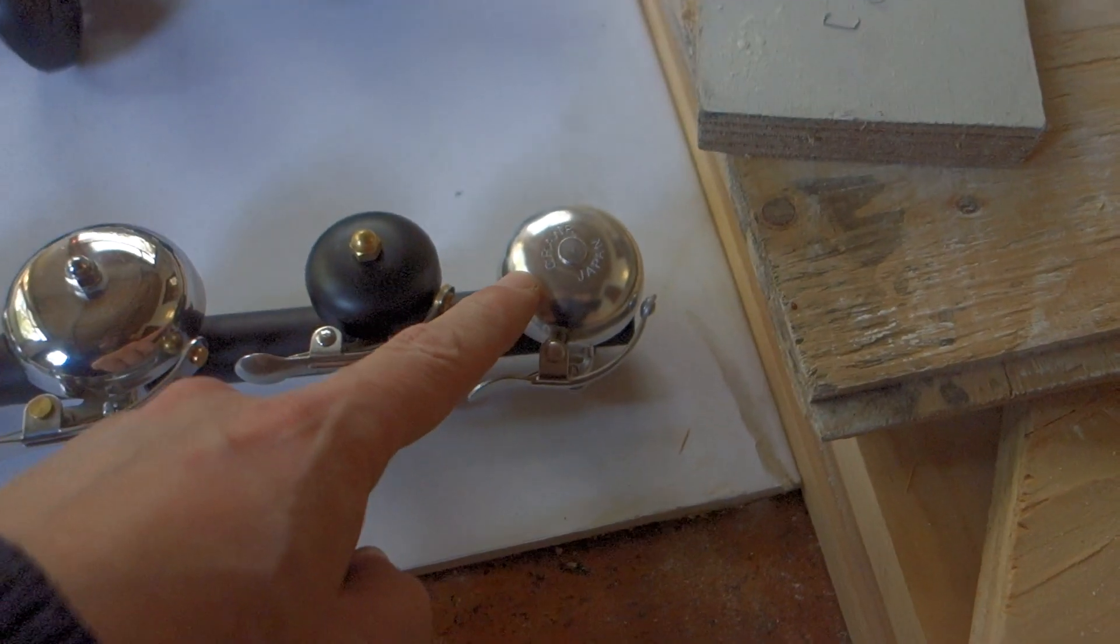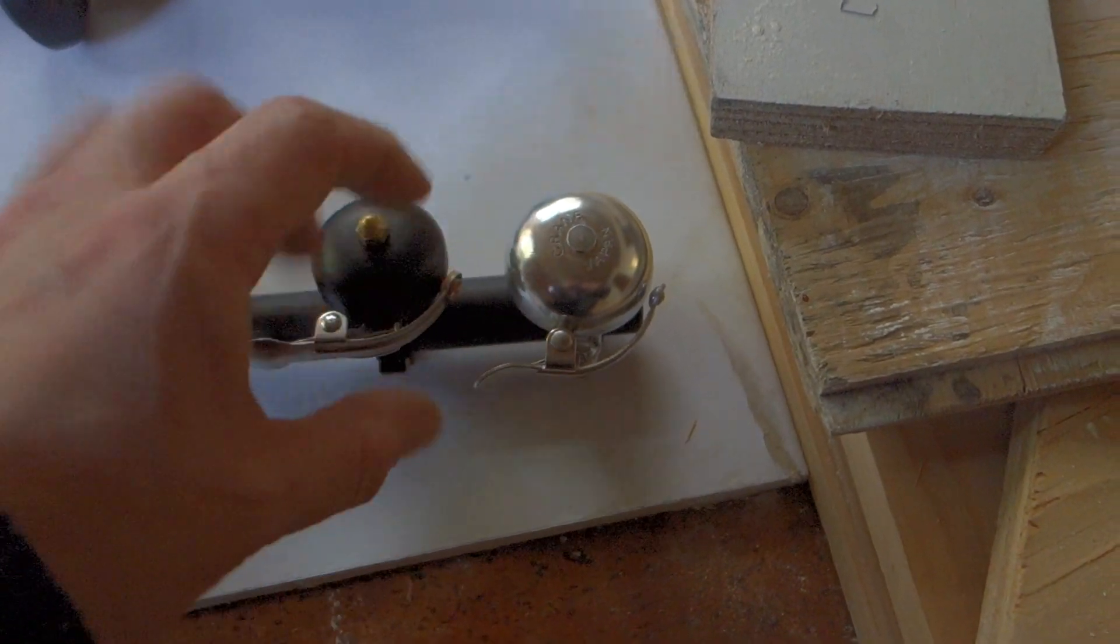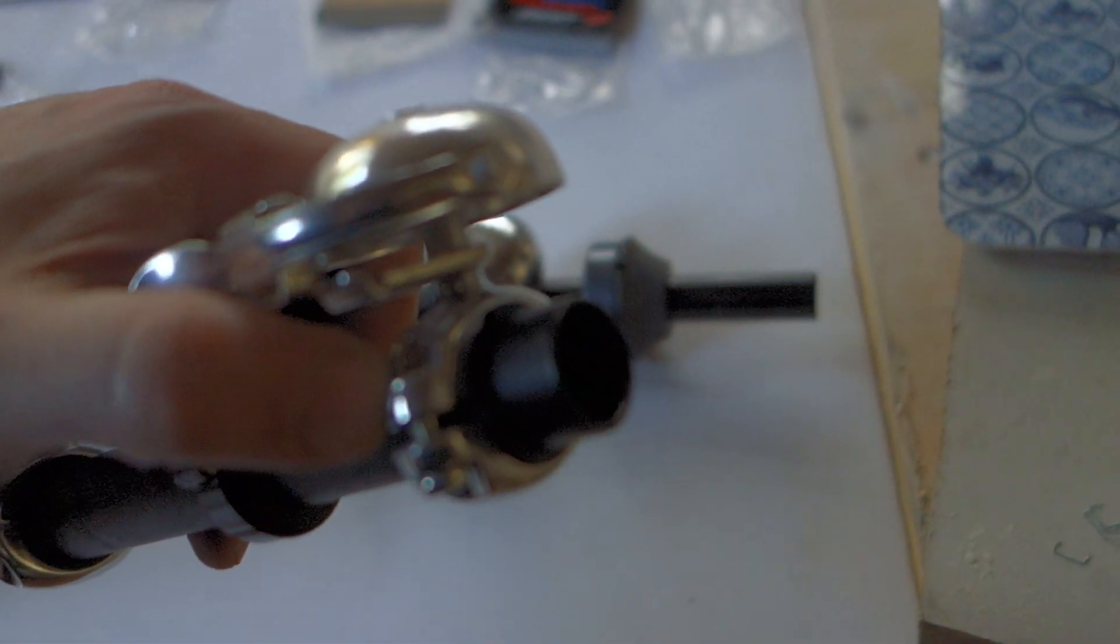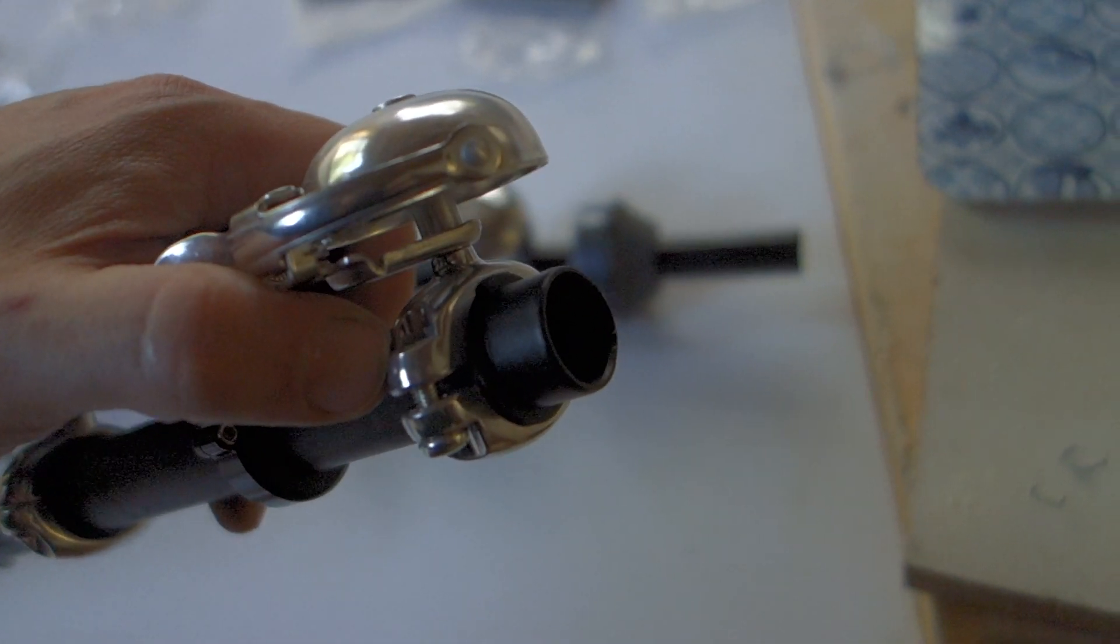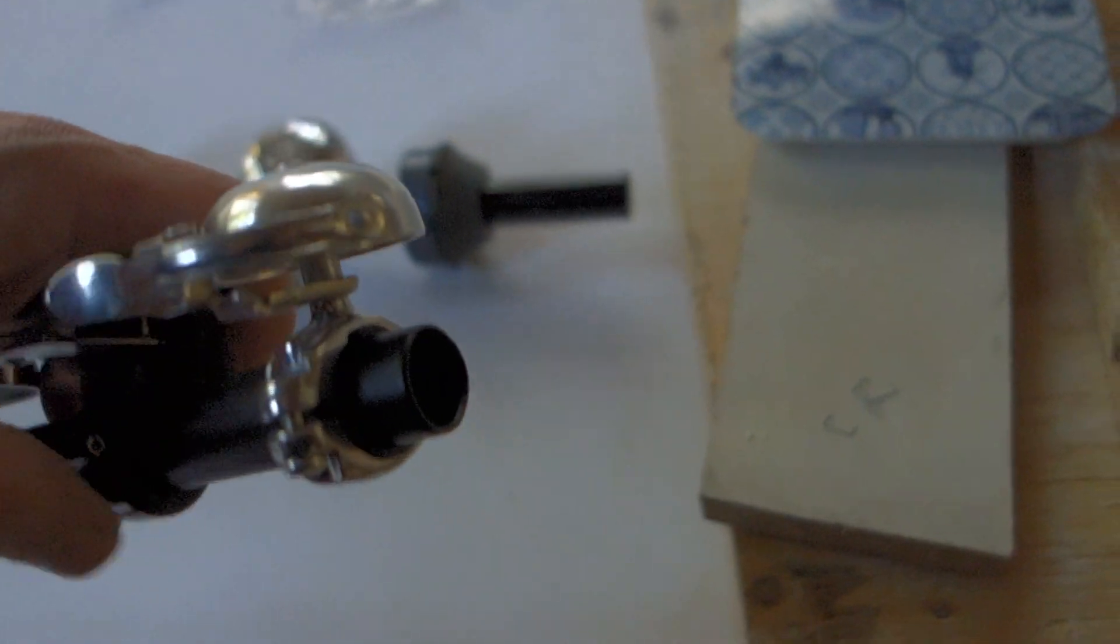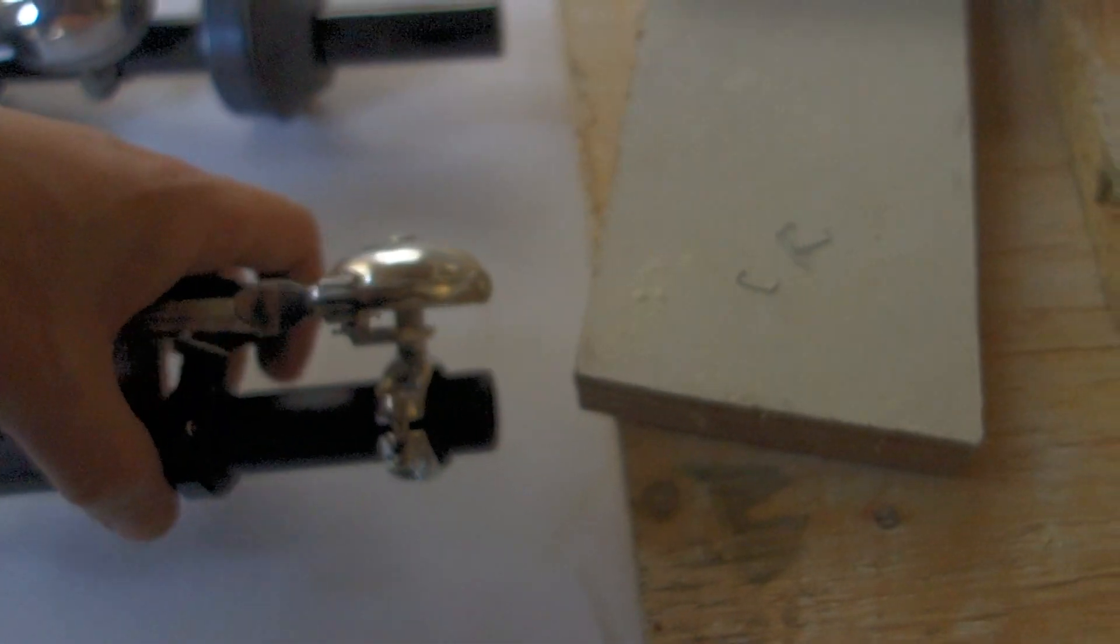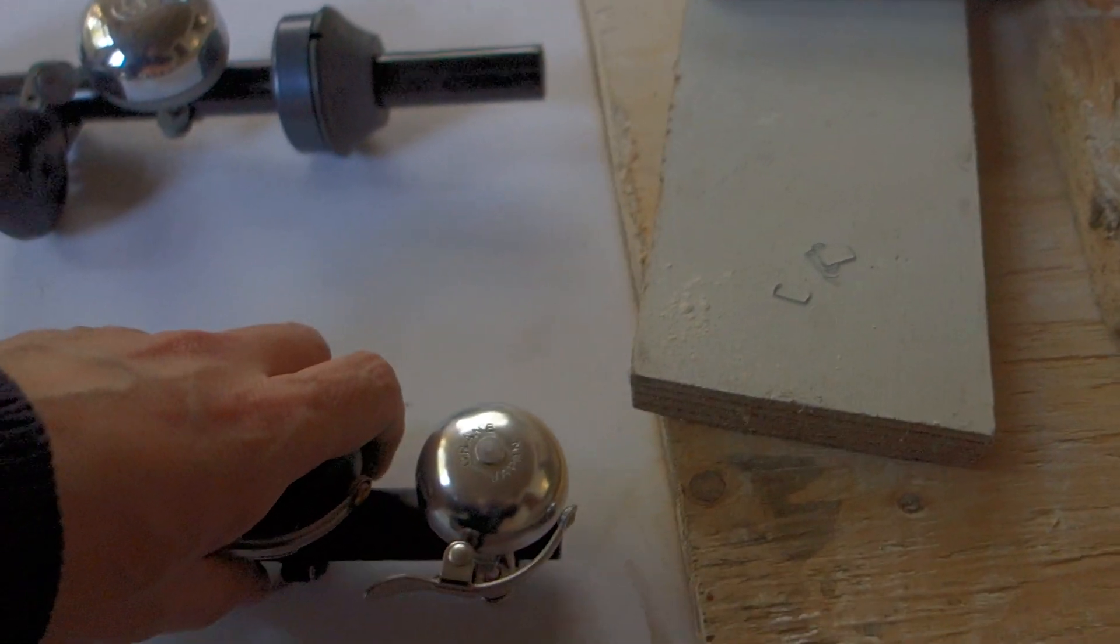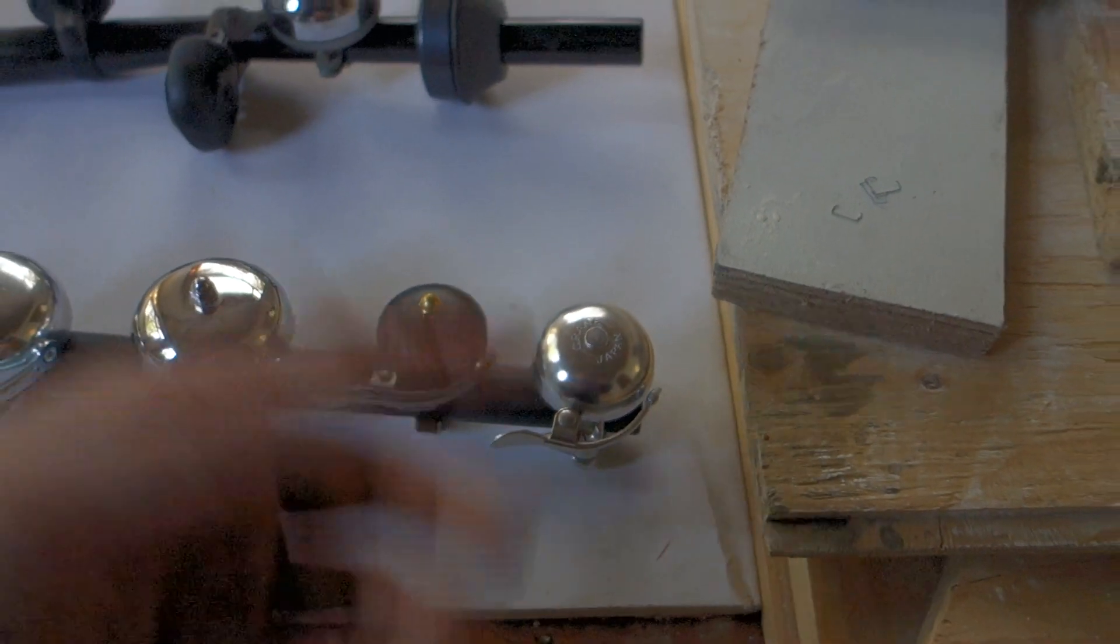Here we have the Crane Mini Suzu W. W means this mount is from aluminum instead of some crappy steel bands. Similar to this band on the, this mount on the Bazille. That's what most of the bigger Crane Bells have. Or all. I think only the smaller ones, 45mm, have the aluminum mount. I don't know why.